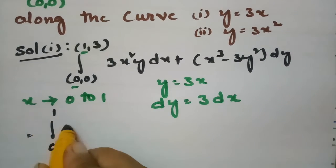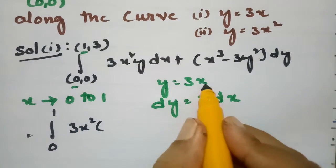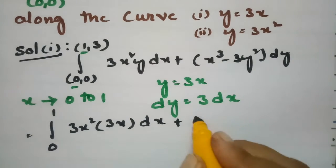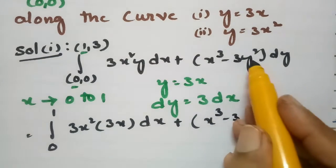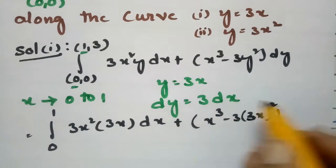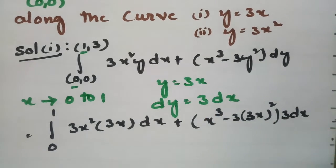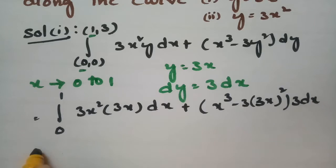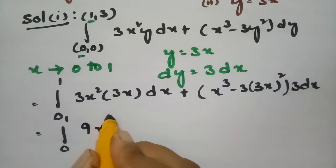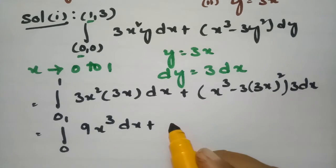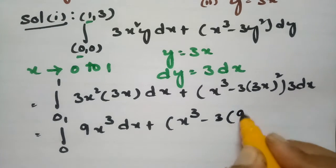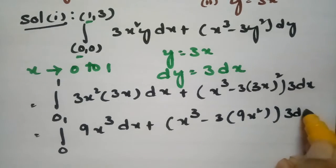So the integral from 0 to 1: this is 3x squared, and in place of y I am substituting 3x, dx; into this value x cubed minus 3 times y squared, where y is 3x. So this becomes x cubed minus 3 times 9x squared, into 3 dx.